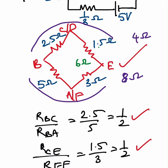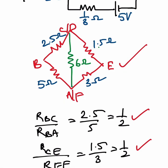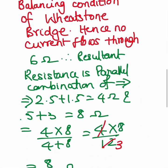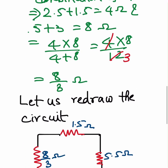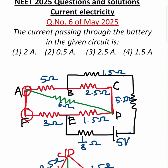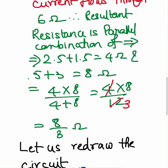So with that, if you redraw the circuit and calculate, you will get the resultant resistance as 8 by 3. So this complete ACDF circuit gives this much resistance, that is 8 by 3 ohms.